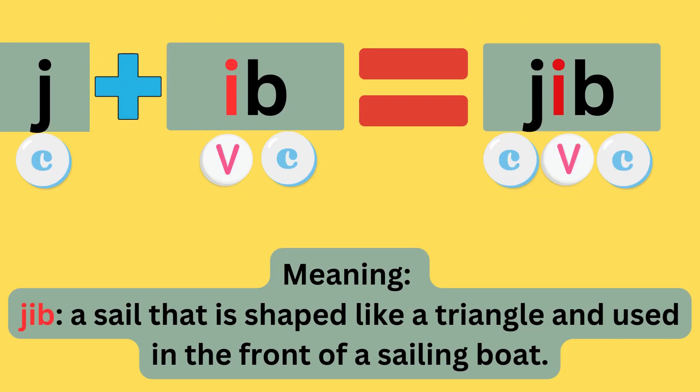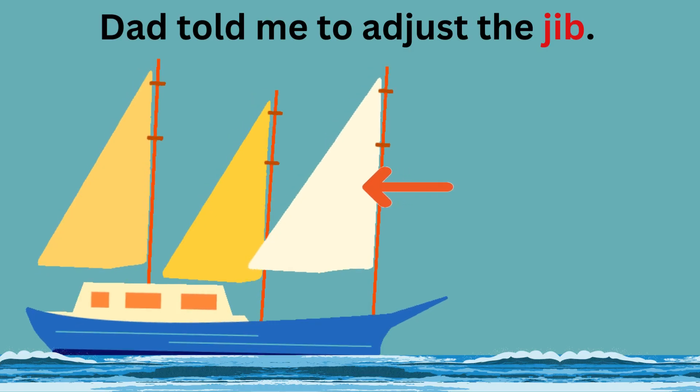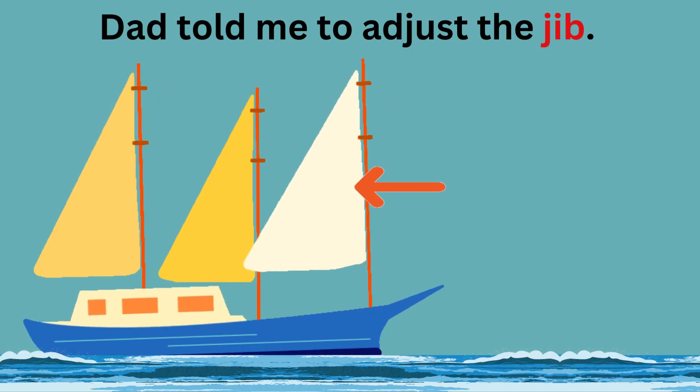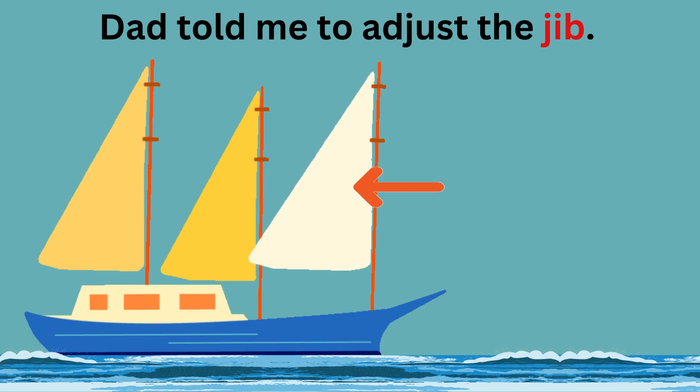J plus -ib equals jib. The sounds are: j-i-b — jib. The meaning is a sail that is shaped like a triangle and is used in the front of a sailing boat. Dad told me to adjust the jib.